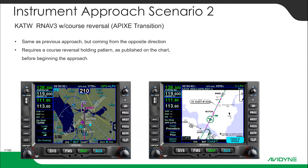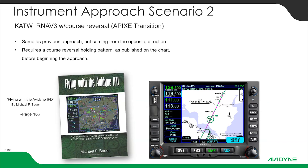This is the RNAV-3 with a course reversal at Apixi, out of Appleton. You can find this scenario on page 166 of Flying with the Avidyne IFD by Michael F.